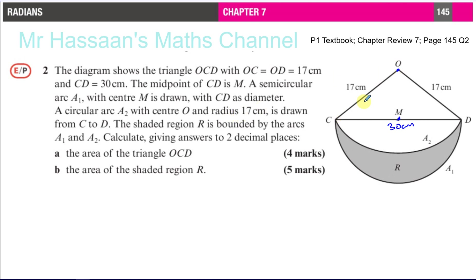Radius 17 centimeters. Now, the shaded region R is bounded by the arcs A1 and A2. Calculate, giving answers to two decimal places. First, the area of the triangle OCD. To find the area of the triangle OCD, there's a number of ways we could do it.